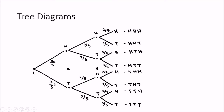For each subsequent toss the probabilities remain the same: 2 over 5 for a head and 3 over 5 for a tail. Completing the tree diagram gives eight branches in total: head-head-head, head-head-tail, head-tail-head, and so on through all combinations. Depending on the question, we look at one branch or a set of branches.